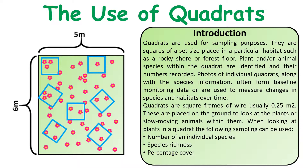You can then take a mean average showing what the mean is per meter squared, for instance. You can then use that average to estimate the total number of a particular species within an area.